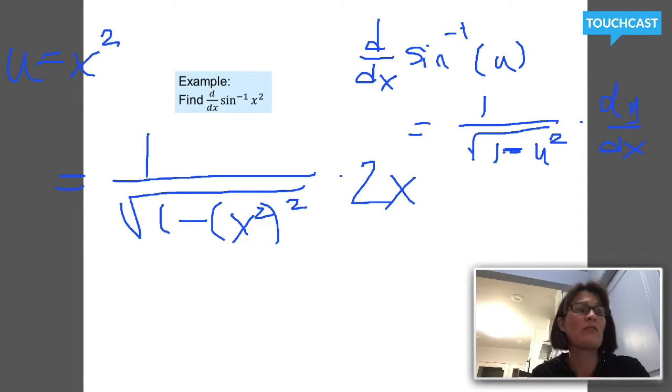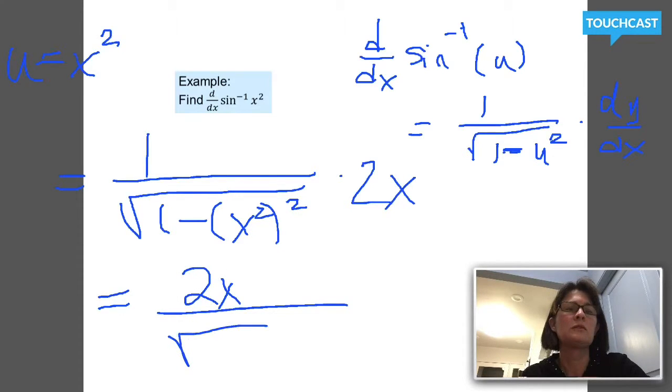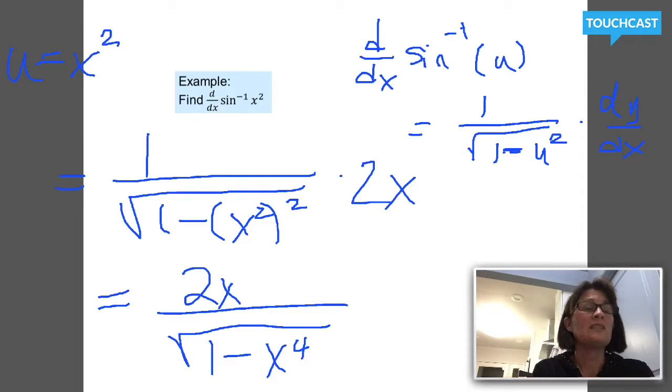If you wrote your answer like this, it's perfect. It gets full credit. If you're taking the multiple choice section, that's going to be rewritten a little bit. The 2x will sit up top here, the square root of 1 minus x squared squared, x to the fourth. So the derivative with respect to x of the inverse sine of x squared is 2x all divided by the square root of 1 minus x to the fourth.